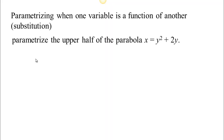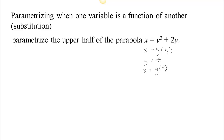We know how to take a parameterization and get a Cartesian equation — recognizing what curve we're dealing with, what direction, and what portion of the curve. The other skill is to go backwards: given some curve, we want to find a parameterization of it. Whenever you have one variable as a function of another, you can set the independent variable to be t, and then the dependent variable will have to be that function of t.